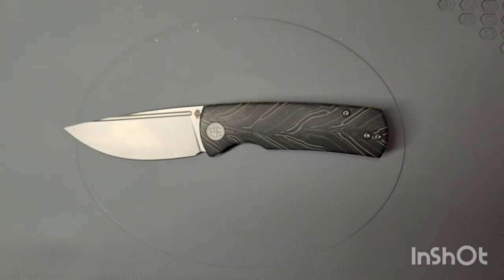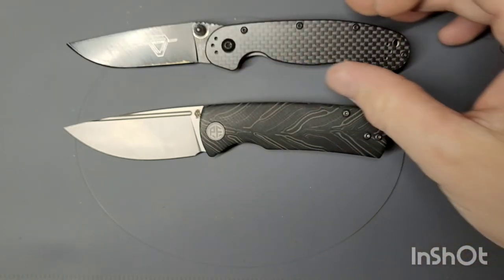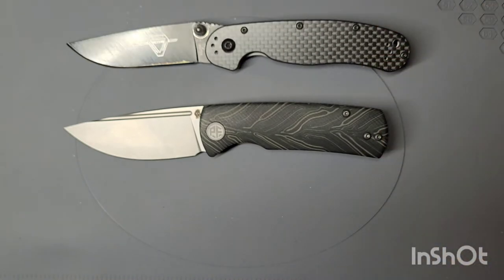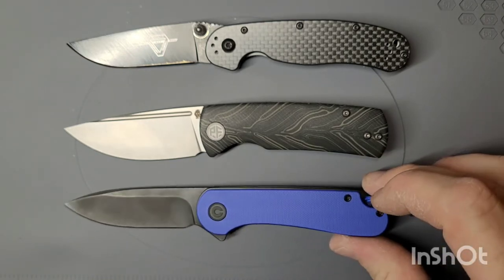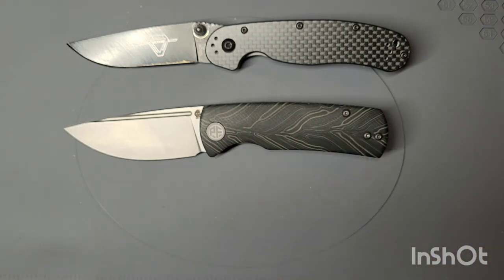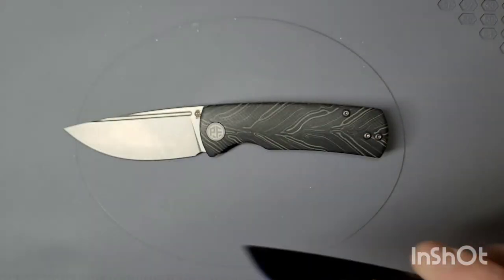So let's do a little size comparison. Up against the Rat Model 2 and Civivi Elementum. As you can see, it's about the same size as those guys.